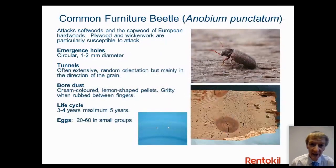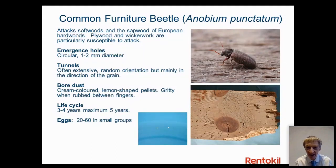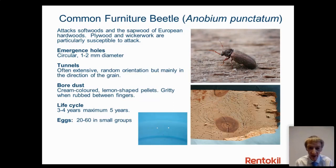Common furniture beetle: a nice dark chocolatey brown colour with what looks like a hoodie on the top of the head. If disturbed, it waves its antennae and flies off with the speed of Superman. Remarkably, they have been known to bore holes through a plastic washing-up bowl. Common beetle targets the sapwood of both softwoods and hardwoods. Be aware that plywood and wickerwork are particularly good hosts — make sure you check these during surveys.